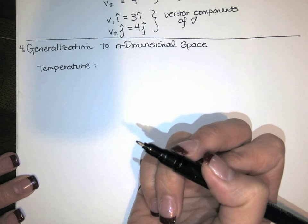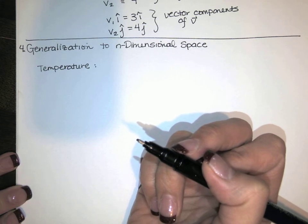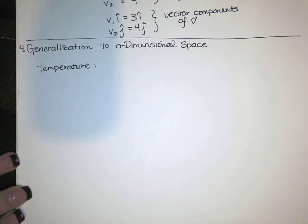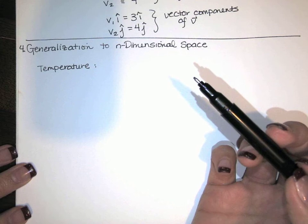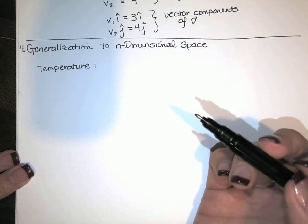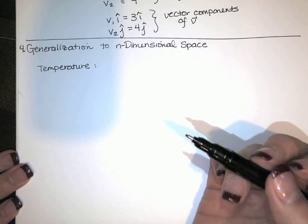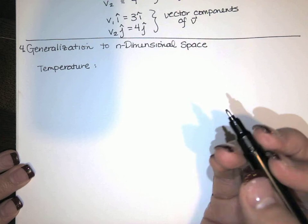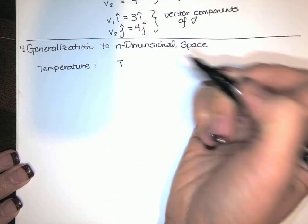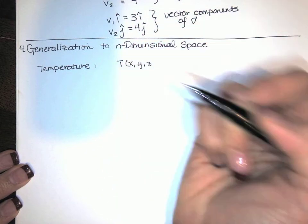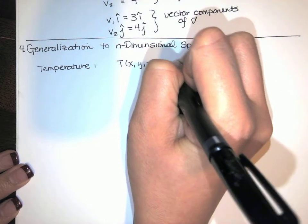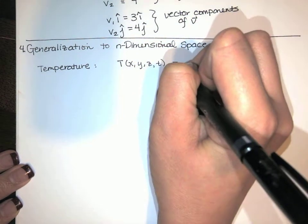I could say the temperature in this room is affected by the thermostat setting, and how much insulation I have in my house. It could also just very simply depend on temperature T could depend on x, y, and z, so three spatial coordinates, and it could also depend on time.